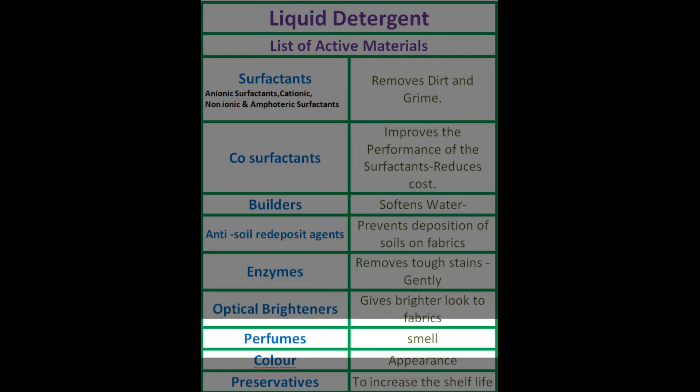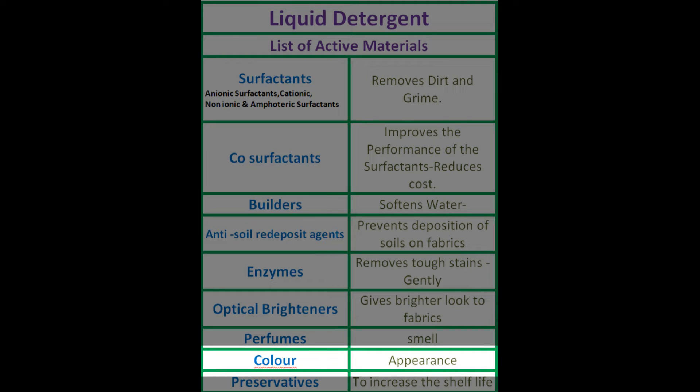A bad perfume is a double minus point for liquid detergent. Color should always be either blue or detergent violet or in between these two colors. This color is globally accepted and followed for liquid detergent — I have stated the reason in our color theory video, which we have already posted. Finally, but most importantly, preservatives and antioxidants. Preservatives are compulsory materials to extend the shelf life of the product. If you want to sell the product commercially, then preservatives are unavoidable.